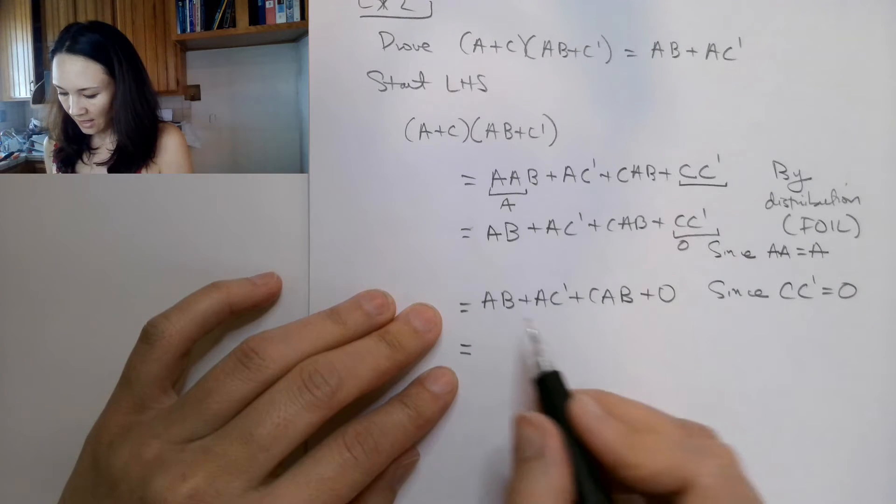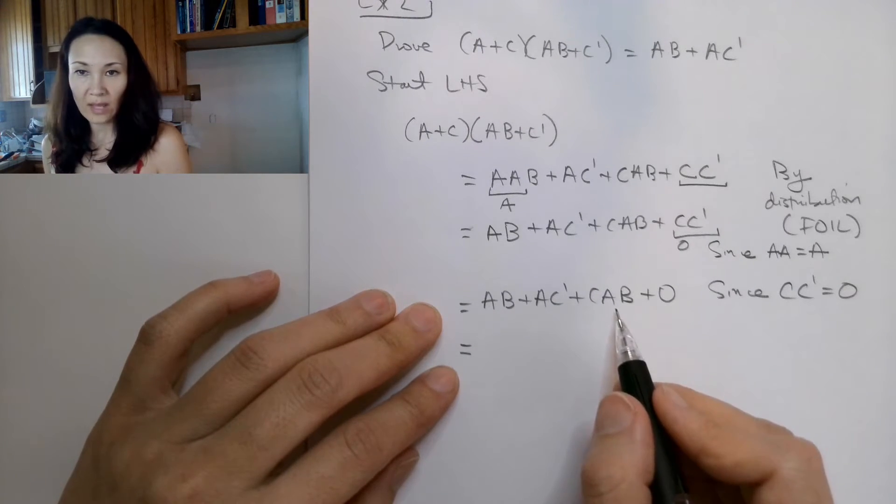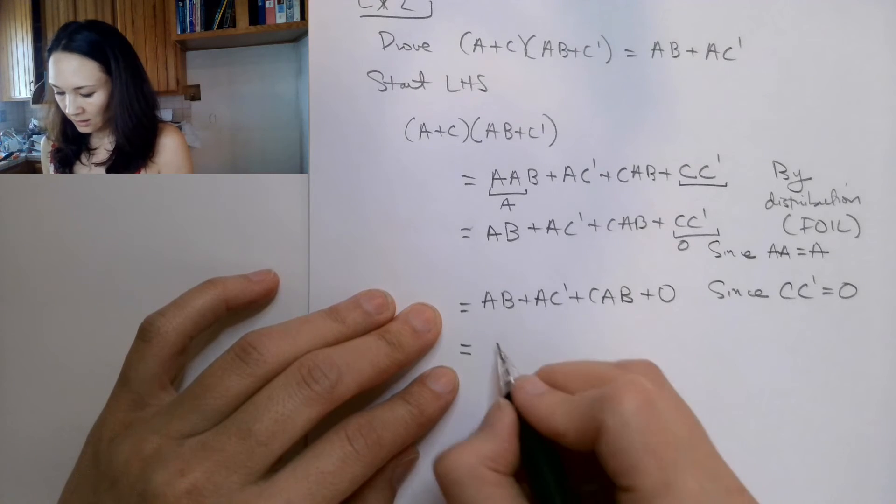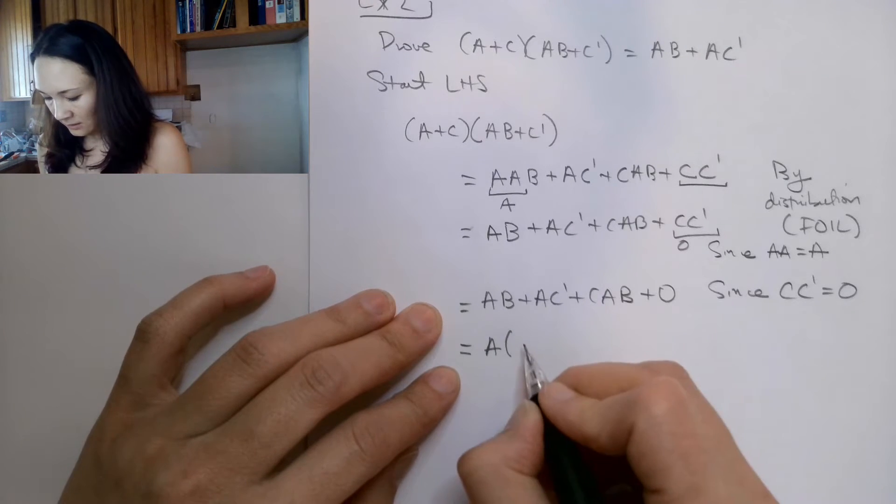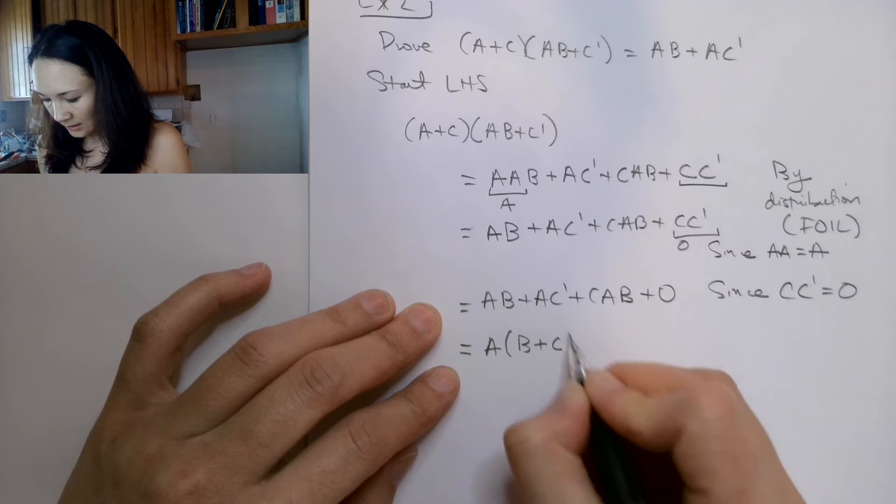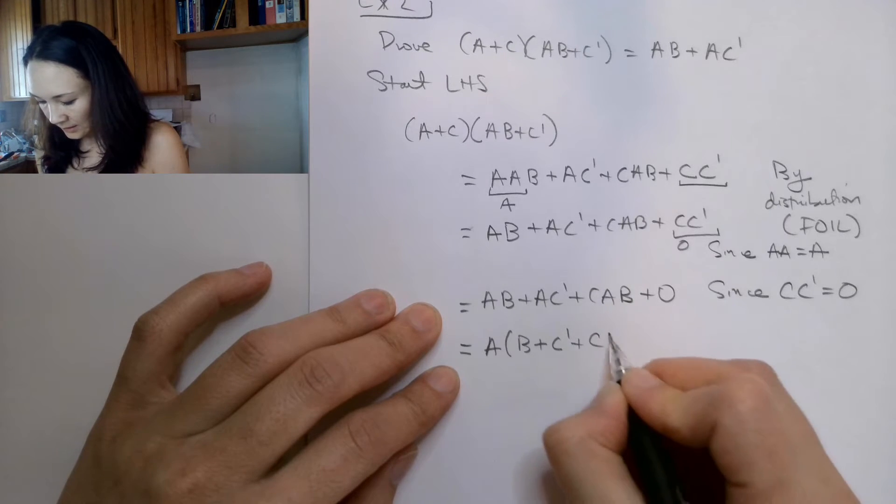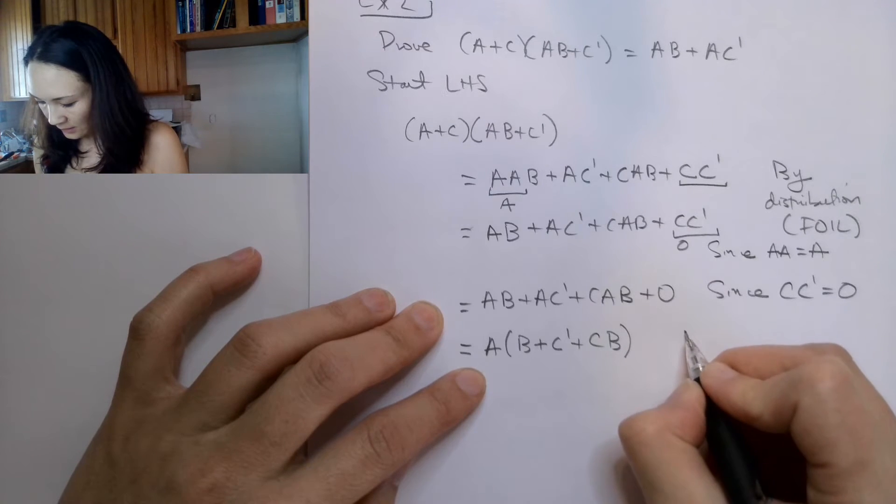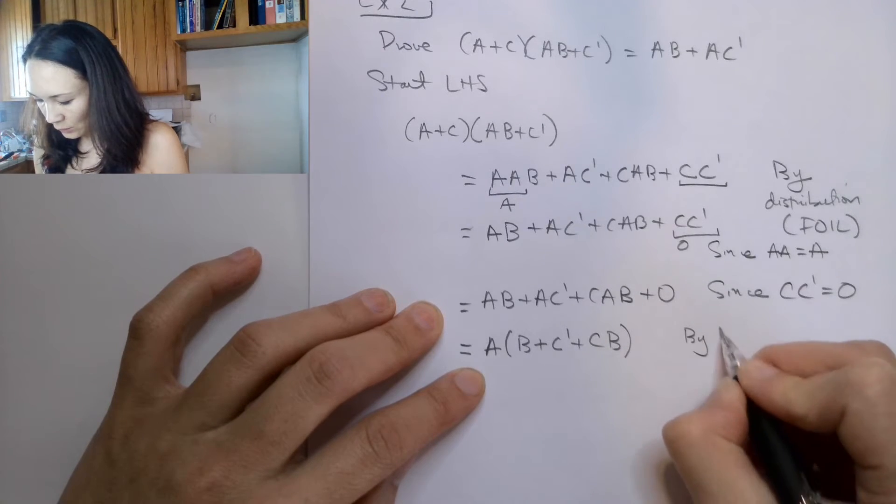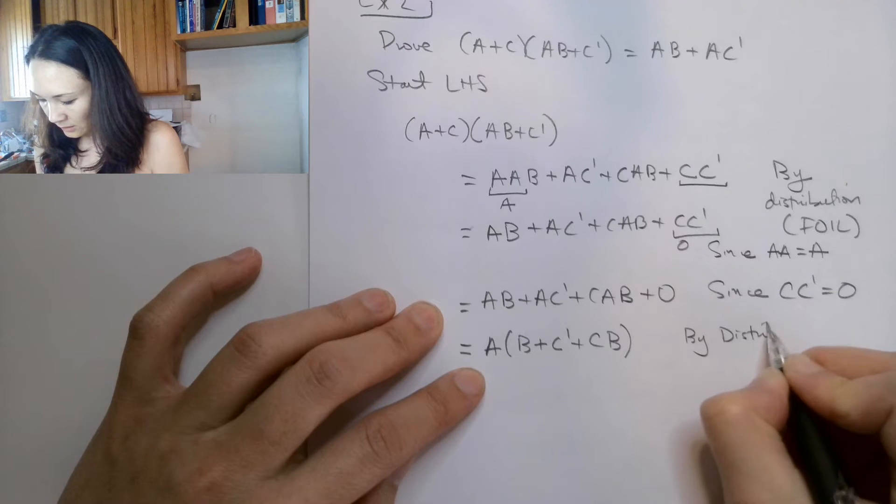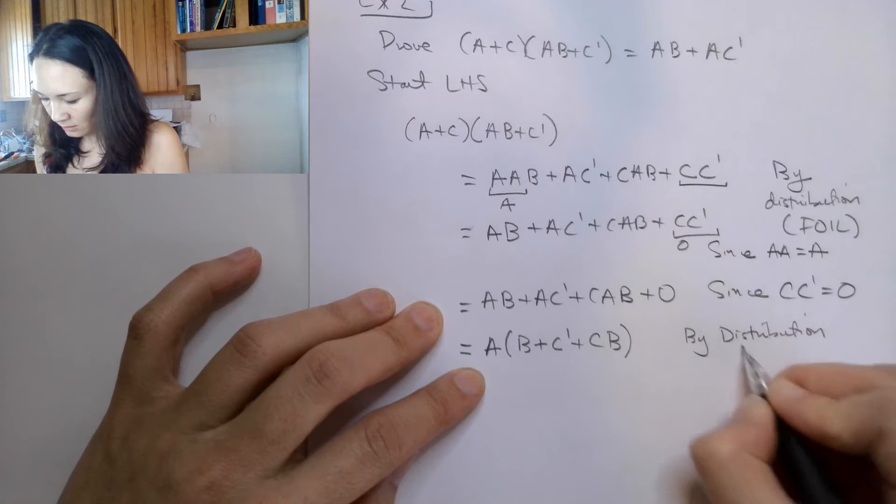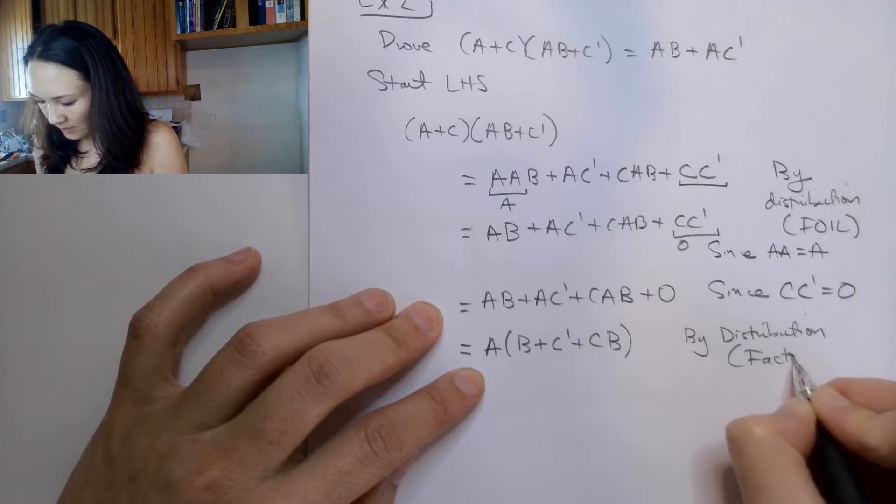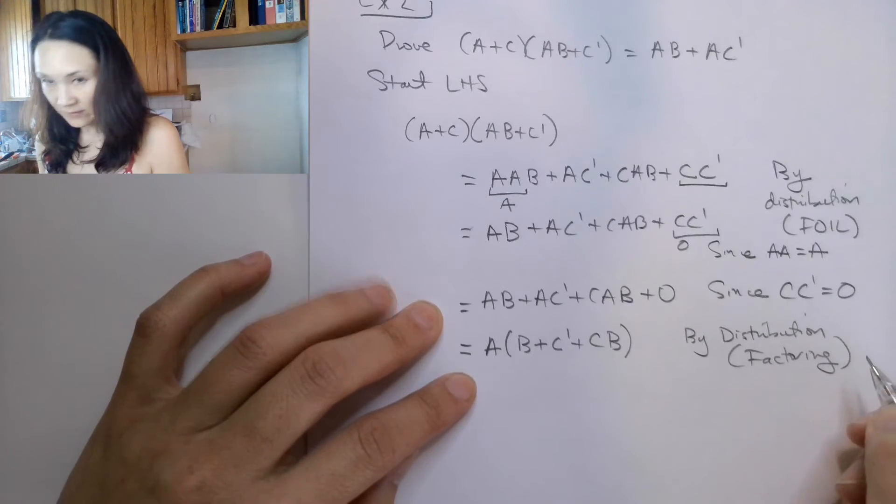And now what can I do? Here I see that each one of these terms I have left has an A in it. So let me go ahead and factor out an A. This gives me A times B or C naught or C, B. And here this is by distribution again, a.k.a. factoring. So I just factor down an A.